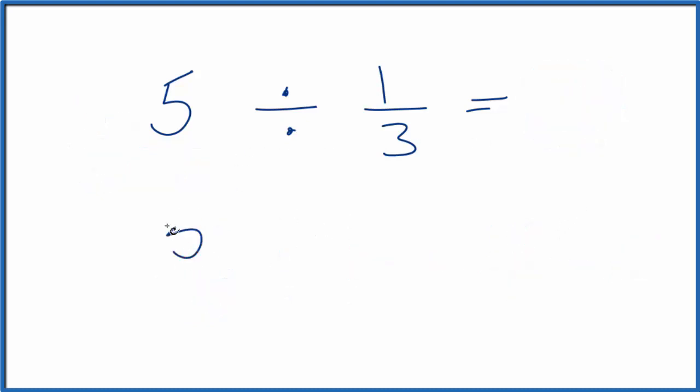We could take 5, and instead of dividing, we could multiply by the reciprocal. So we could flip the 1 and the 3. Take the reciprocal. That's 3 over 1.